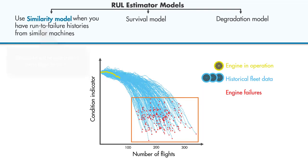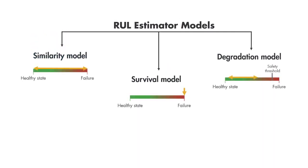Let's wrap up what we've discussed so far. These are the three common ways to estimate RUL. If you have data only from time of failure, then you can use survival models. If failure data is not available but you have knowledge of a safety threshold, you can use degradation models. And if you have complete histories from similar machines, then you can use similarity models to estimate RUL.